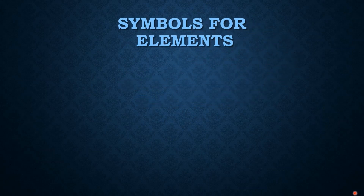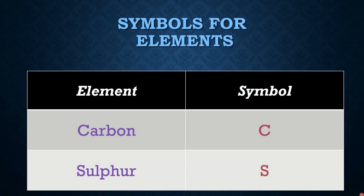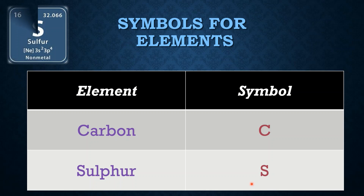Now we move to the symbols of some elements. When a single letter is used as a symbol, it must compulsorily be a capital letter. Some examples are carbon, sulfur, oxygen, nitrogen, and potassium.